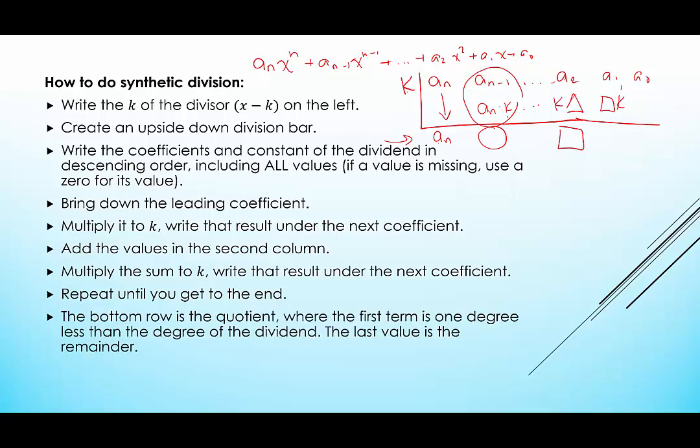We repeat until we finally get to the end. The bottom row is the quotient. And the first term is one degree less than whatever we started with in the dividend. So the dividend was of degree n. That means this is the new coefficient of the leading coefficient of the quotient, but the exponent is one fewer, because we were dividing by something linear.